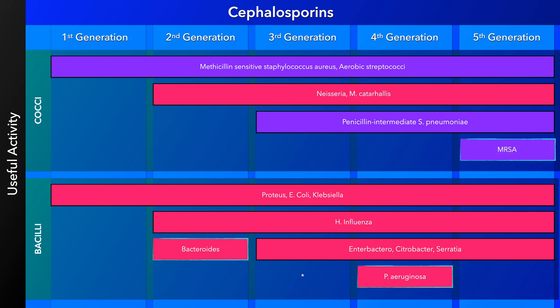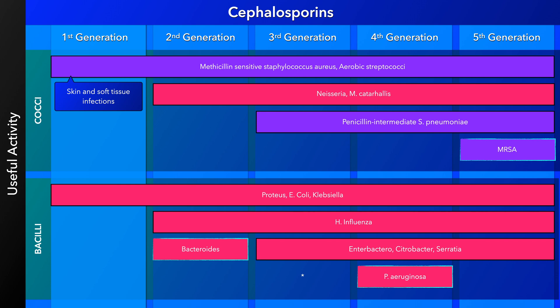The first generation of cephalosporins are effective for uncomplicated skin and soft tissue infections due to their coverage against most gram-positive cocci. They are also commonly used for perioperative prophylaxis. Gram-negative coverage is limited, but they can treat some infections due to gram-negative enterics, such as simple UTIs due to a susceptible organism.